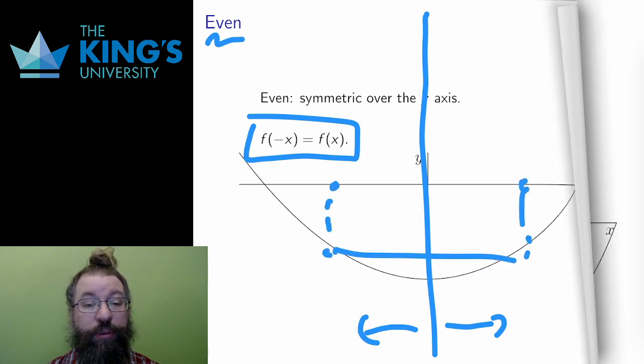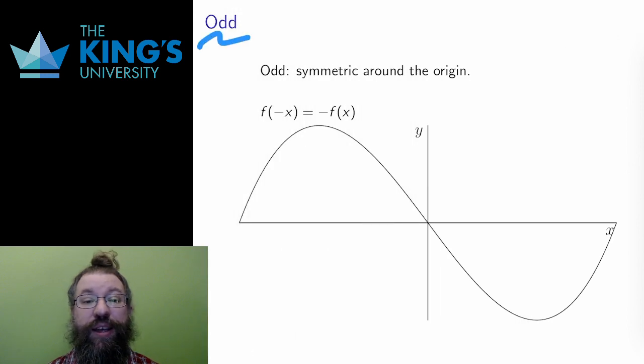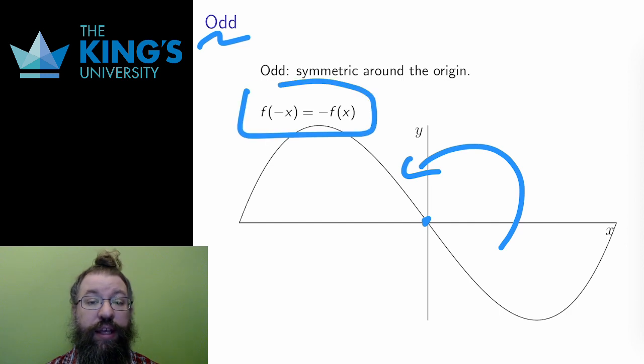Odd symmetry is rotational symmetry by a half turn around the origin. That is, if I spin the function around, the shape stays the same. Algebraically, this is f of negative x equals negative f of x. That is, the negative and positive values are the same except for their sign. If one is positive, the other is negative.